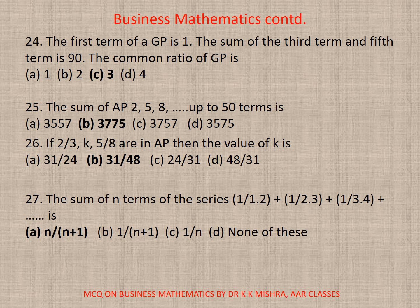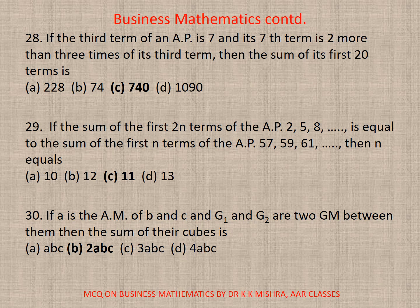Question 27. The sum of N terms of series 1/1.2 + 1/2.3, etc., will be A, that is N/(N+1). Question 28. If the third term of AP is 7, and its seventh term is 2 more than 3 times of its third term, then the sum of its first 20 terms is, here correct option is C, 740.